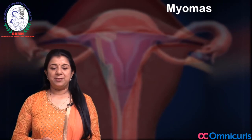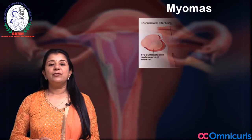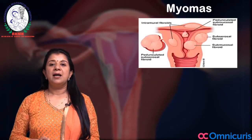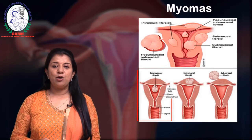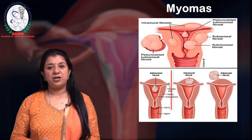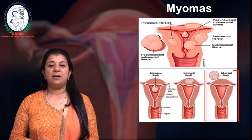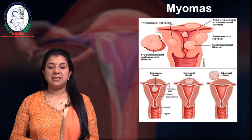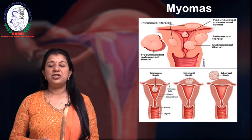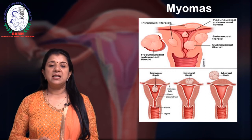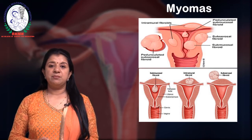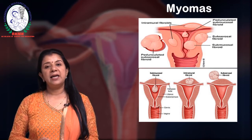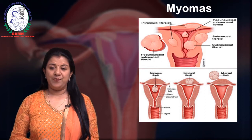When do we do a hysteroscopic myomectomy? Myomas are developed in the uterus — there are subserous myomas, intramural myomas, and submucous myomas. The myoma which lies in the uterine cavity is called a submucous myoma, and these submucous myomas can be removed hysteroscopically.